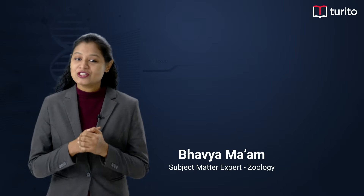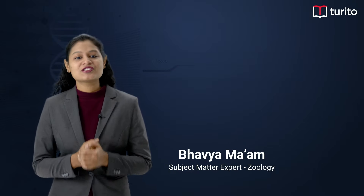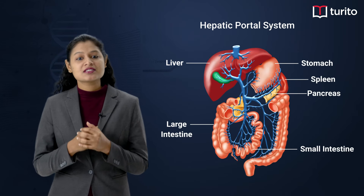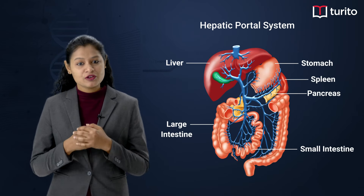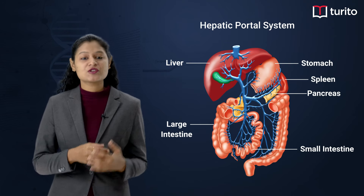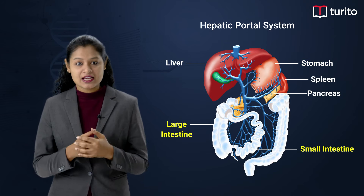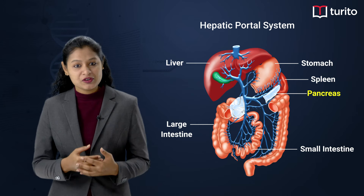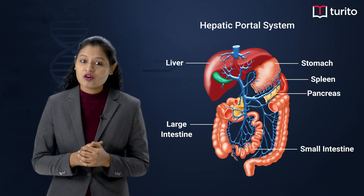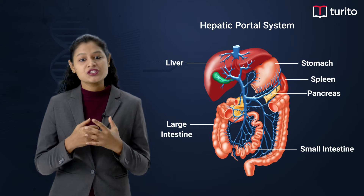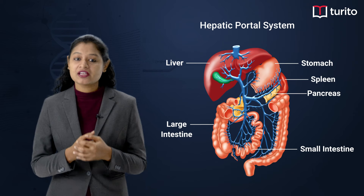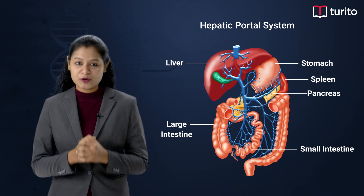Hello students, today let's talk about the hepatic portal system. The hepatic portal system consists of a series of veins carrying blood from the capillaries of the stomach, intestine, spleen, and pancreas towards the capillaries of the liver. It is one of the filtration units of the body, responsible for further detoxifying certain waste material from the body.